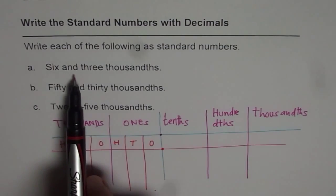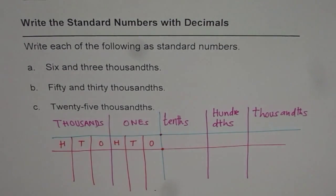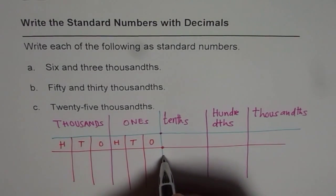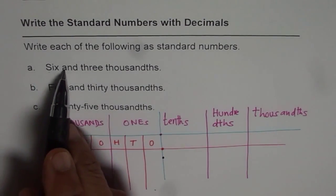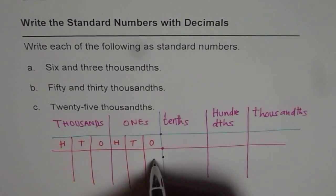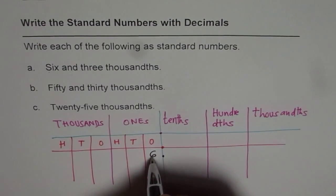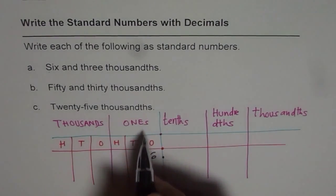Now, six and three thousandths. That means 'and' means decimal. So that is the decimal number, six and. So the number before decimal on the left side should be six. Six ones, that means three thousandths.